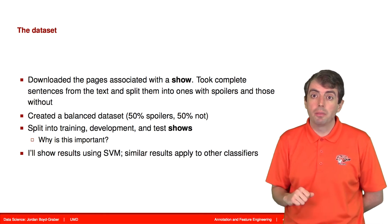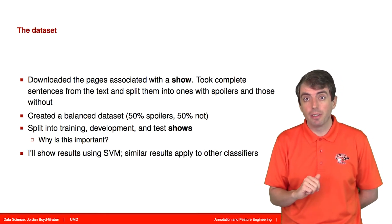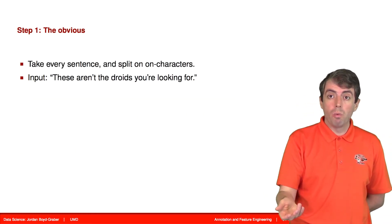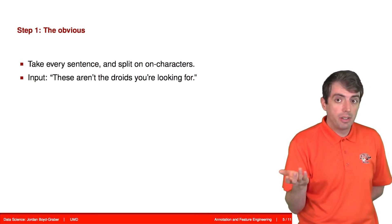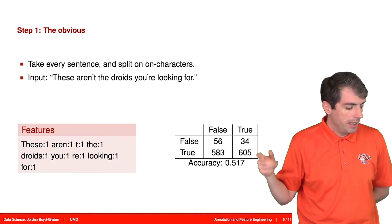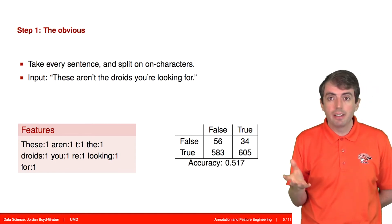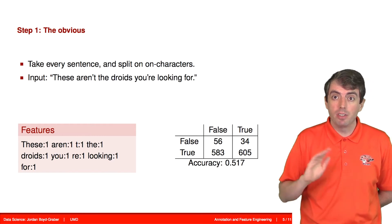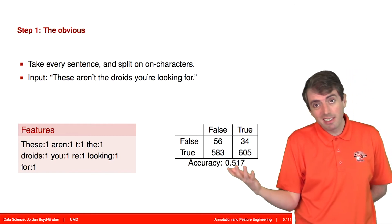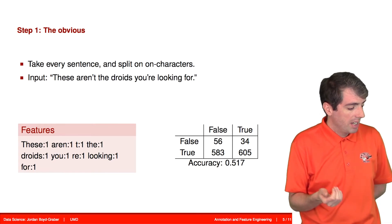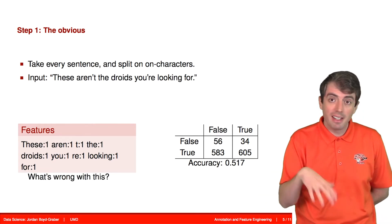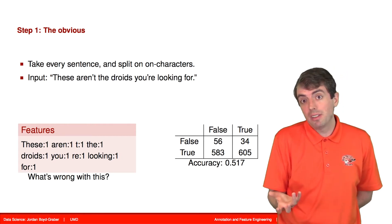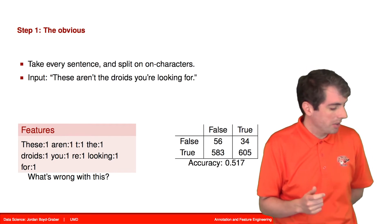I'm going to show results using support vector machines, one specific classifier, but the results hold for other classifiers as well. The first thing you can do is throw in all of the words as features. If you do that, you get an accuracy of around .517. This is a balanced data set, so our baseline of just guessing randomly is .5. So this is helping a little bit, but not very much. One problem is that it's completely ignoring word order — you're just looking at individual words, which isn't enough to really understand what's going on in a sentence.